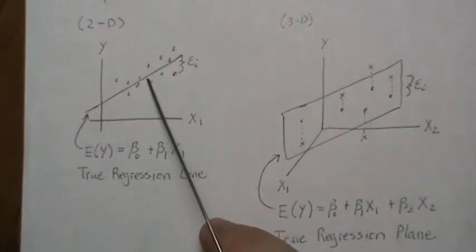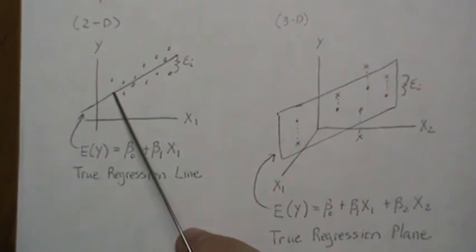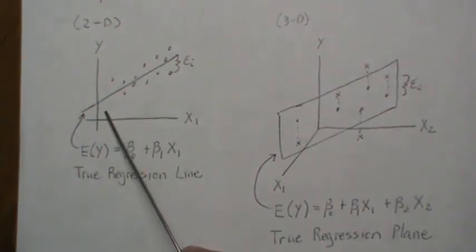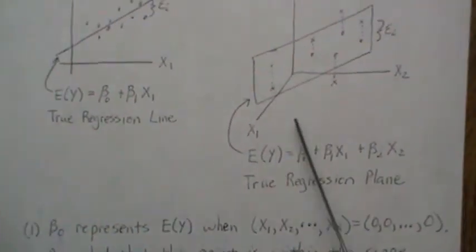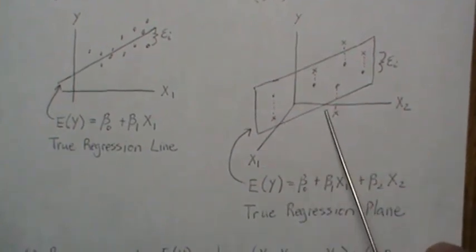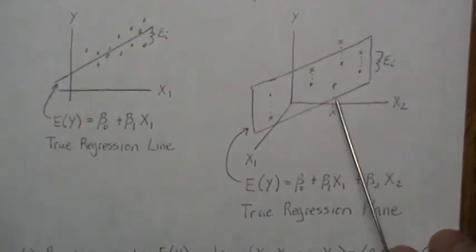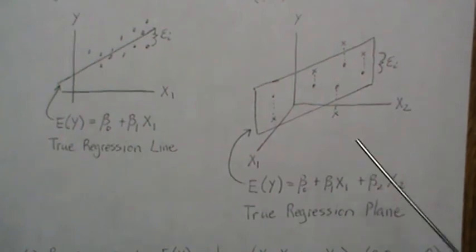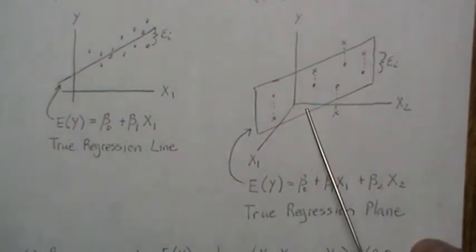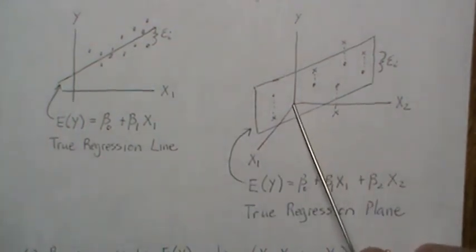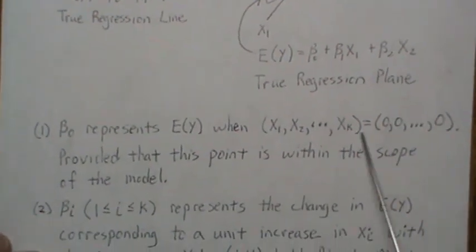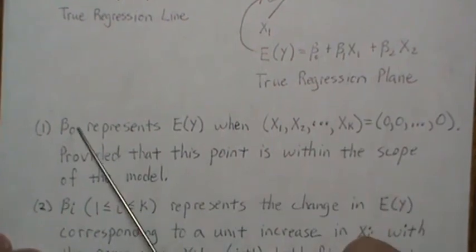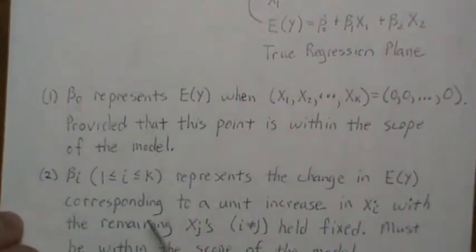And so the interpretation of beta 0 is not valid because it's not in the scope of the model. Now, the data follows this, but once we get past that point, it actually maybe dies down and goes to here. So this isn't a true representation of our data. Same way with the plane or any other hyperplane in k dimensions, the scope of the model has to include that 0, 0 point, or the 0, 0, 0 point, or however many predictor variables you have for that to be a valid interpretation.